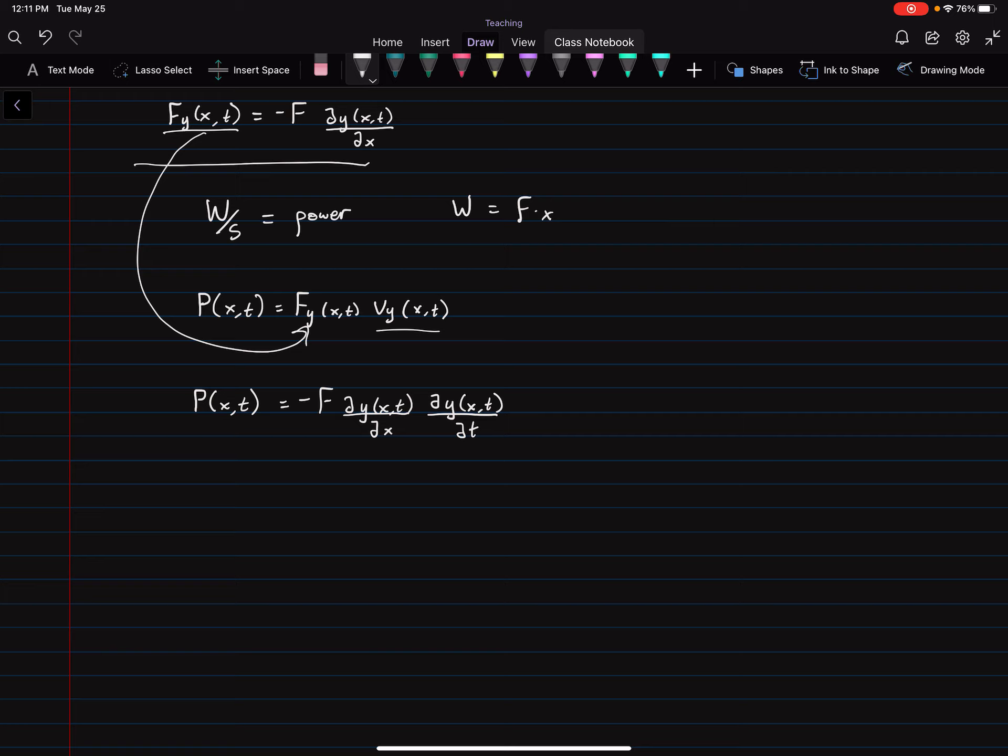So this right here is the instantaneous rate of energy transfer along the string. And you can read from the equation that it depends on both X and T. So the X position and the time. So that's kind of interesting. It means the energy isn't transported uniformly at all locations along the waveform, even though there's very periodic, smooth motion going on. It really depends on the position and then the time, how much power is being transported, how much work is being done.